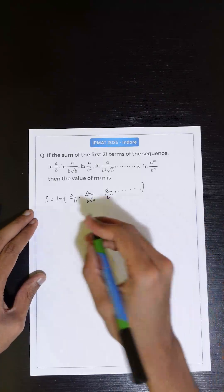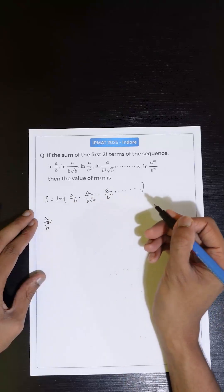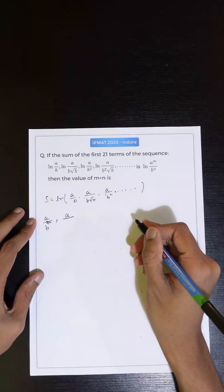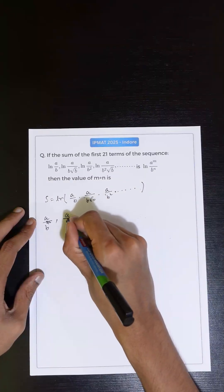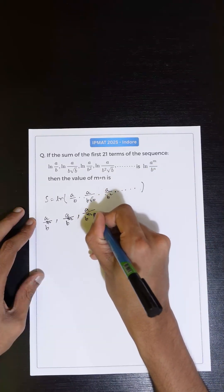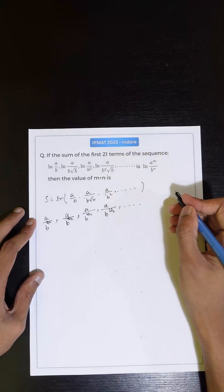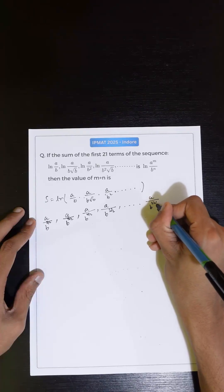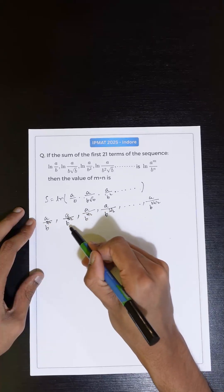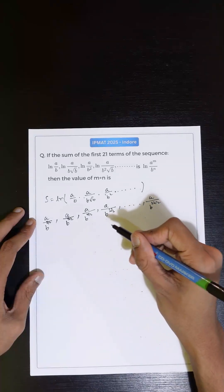Looking at the product — the first term is a/b, and the power of b is 1, so I can write it as 2/2. The second term is a/b^(√b), so the power is 3/2. Similarly, for the third term the power is 4/2, for the fourth term the power is 5/2. So for the nth term, the power of b is (n+1)/2.